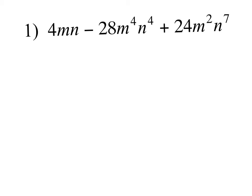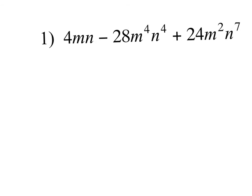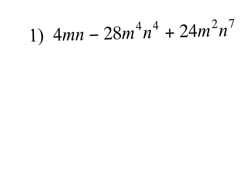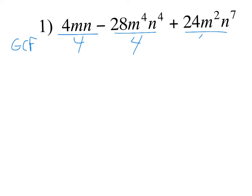So what would be the very first thing you'd ask yourself to decide how you're going to factor it? Is there a GCF? Yes. So is there a GCF? Yeah — four, and then an m and an n can be factored out of all those terms.